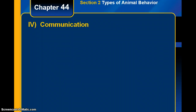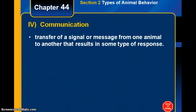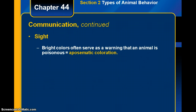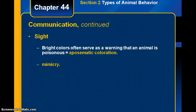The next type of animal behavior has to do with communication — the transfer of a signal or message from one animal to another that results in some type of response. There are different types. Animals can use sight for communication; bright colors can serve as a warning. This is called aposematic coloration, and it might warn others that the animal is poisonous. Mimicry can also be used as communication.